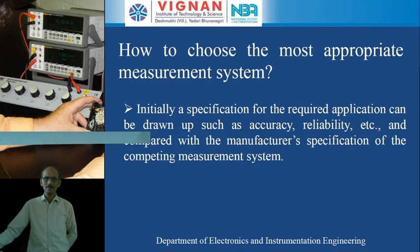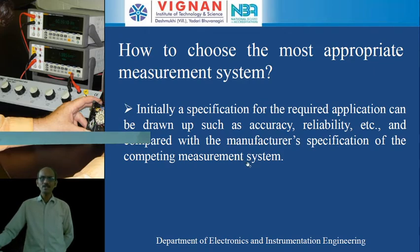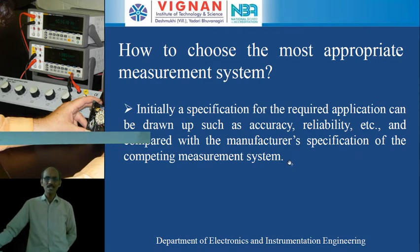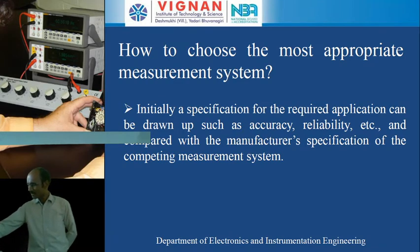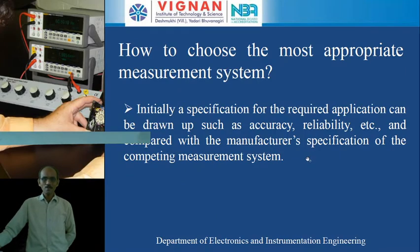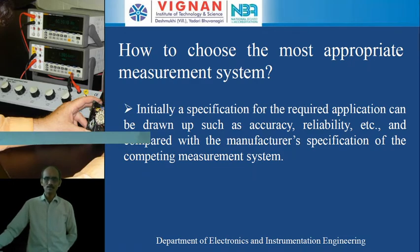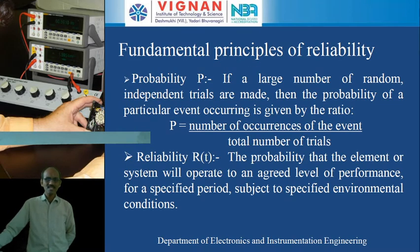If our requirements are the same as the specifications of the particular instrument, then we are going to choose that voltmeter for the measurement of this voltage. In this way, we can choose the particular measurement system for the measurement. That is, initially a specification for the required application can be drawn up — such as accuracy, reliability, etc. — and compared with the manufacturer's specification of the competing measurement system. By comparing, if the two have the same requirements, then we can choose the particular instrument for the measurement of the physical quantity. These are the fundamental principles of reliability.